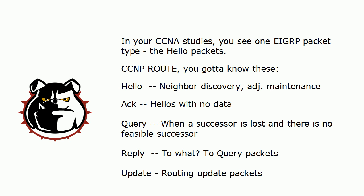The update packet is our routing update packet. EIGRP routers and new neighbors will only exchange full EIGRP routing tables at the very beginning of the adjacency. After that, they send out updates only as needed, only to the routers that need them, and reflecting only the routes that have changed — not a full routing table every single time like RIP does.